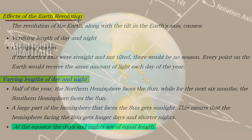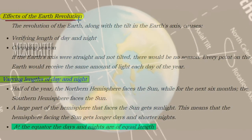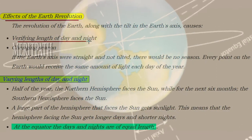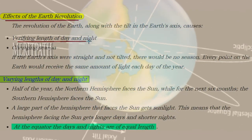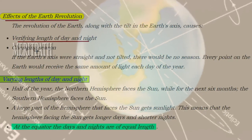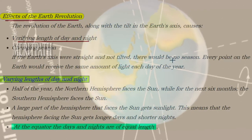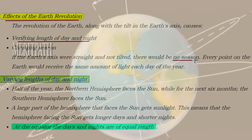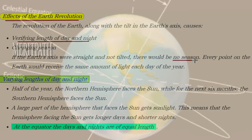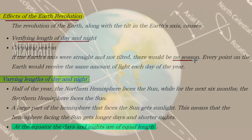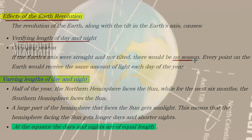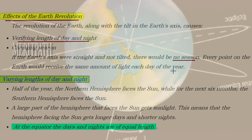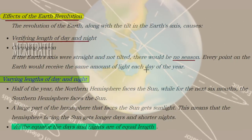Now let's learn about the effects of earth's revolution. The revolution of the earth, along with the tilt in the earth's axis, results in varying lengths of day and night, and seasonal changes. If the earth's axis were straight and not tilted, there would be no seasons at all — we would always have the same type of season. Because the earth's axis is tilted, we experience different seasons, and every point on earth would otherwise receive the same amount of light each day.